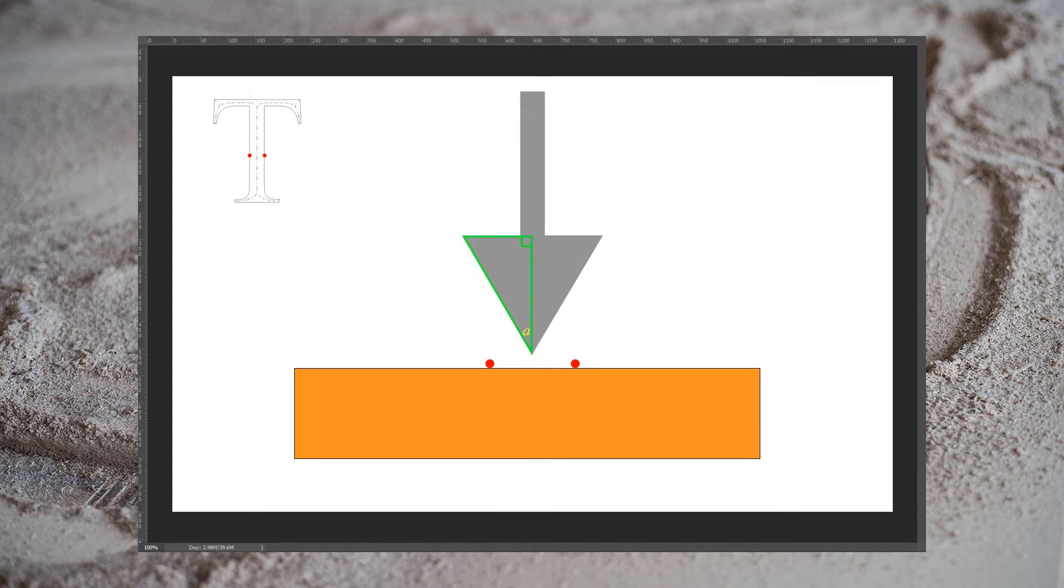We already have some information here. I've marked an angle A, and A would simply be half of the stated angle of the bit. In this case, it's a 60-degree bit, so we have a 30-degree angle A. The second important piece of information we have is the width of our cut. In this case, one half an inch, which I've marked as X.